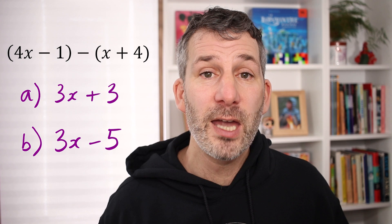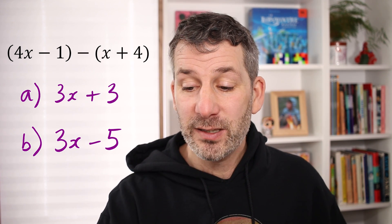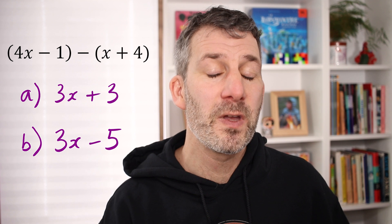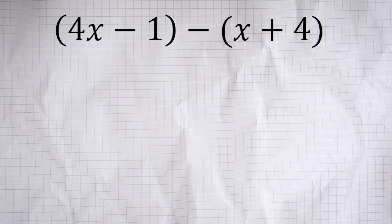My guess is that you either end up with 3x add 3 or 3x minus 5. One of those two, but only one of those is correct. And in fact, the correct one is 3x minus 5. Let me explain why. We have to take away both of the things in that second bracket—we have to take away x, and we have to take away 4.